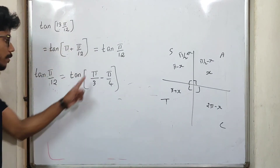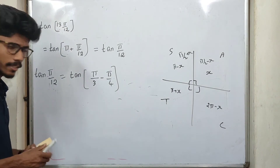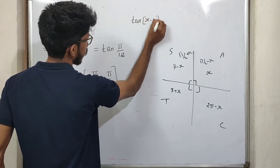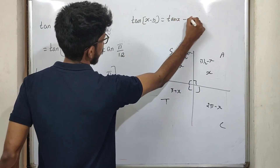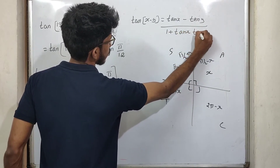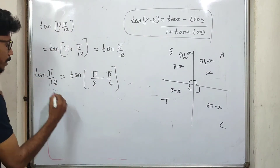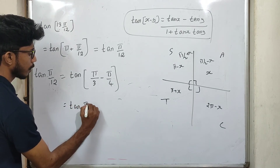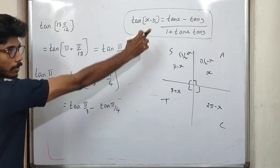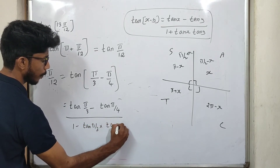Clear? Now we will apply the trigonometric formula. Trigonometric subtraction formula: tan(x minus y) equals tan x minus tan y divided by 1 plus tan x tan y. So, tan(π/3 minus π/4) equals tan(π/3) minus tan(π/4), divided by 1 plus tan(π/3) times tan(π/4).